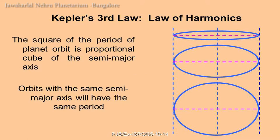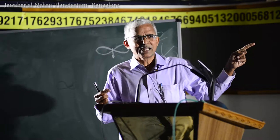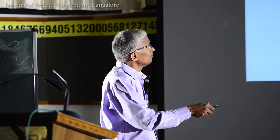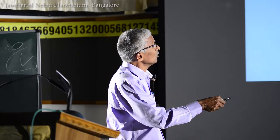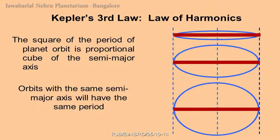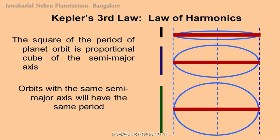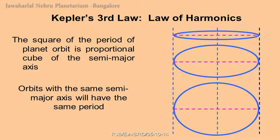Kepler's third law shows that for orbits with the same semi-major axis, the time period is the same even if eccentricity differs. The eccentricity can vary while the semi-major axis remains constant, meaning the orbit period stays the same. Of course, all of this is governed by complex mathematical equations, and ultimately by the universal law of gravitation.